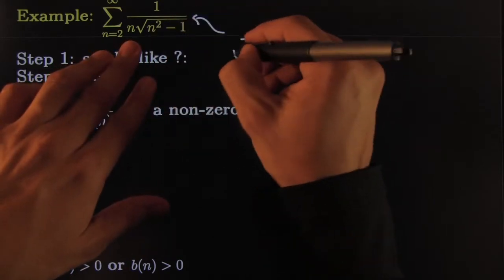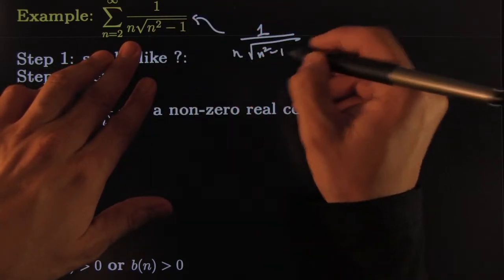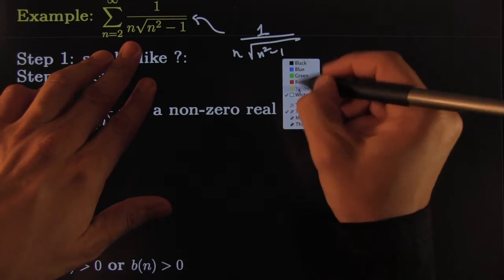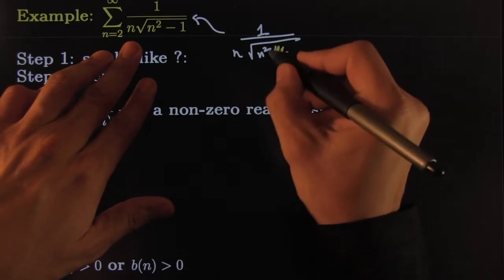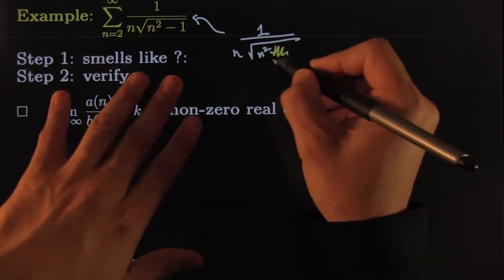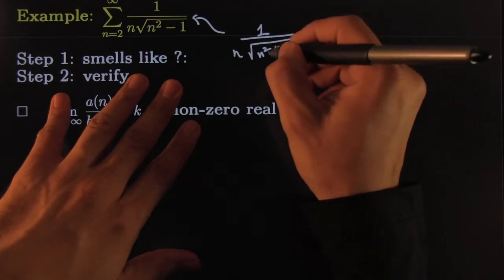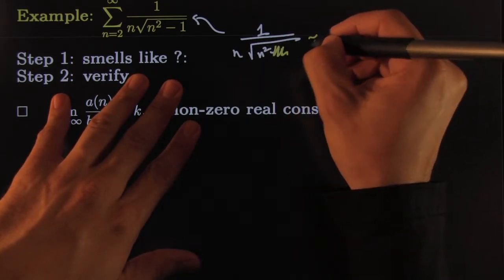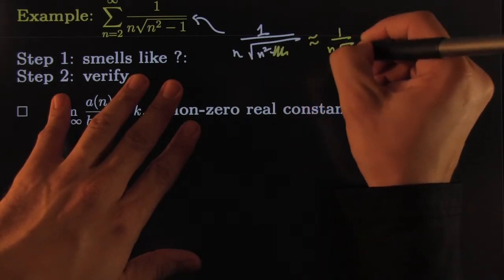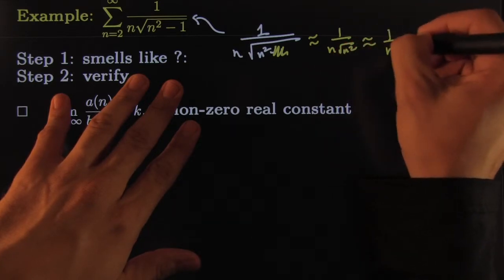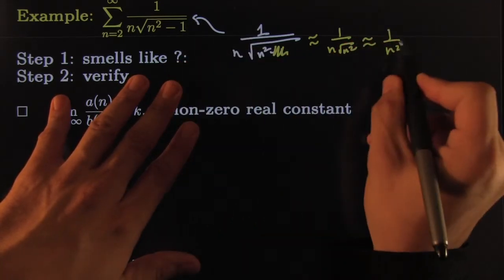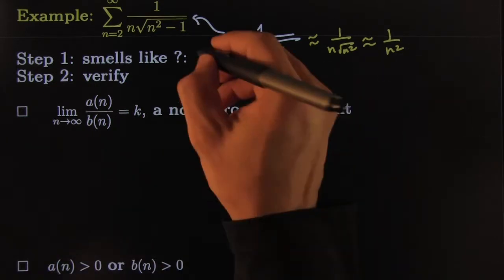The bottom you got n times the square root of n squared minus 1. I'm thinking that the minus one is not going to affect it that much when your n is huge. Who cares if you just subtract one, right? So this will be more or less like 1 over n times the square root of n squared, which will be roughly 1 over n squared. So I'm thinking that this smells a lot like 1 over n squared.